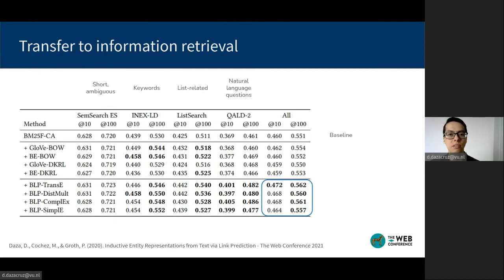We show results over queries from short and ambiguous to natural language questions on the right, and then the results when considering all types.